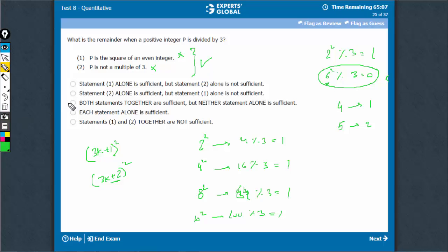Together, it works. We get 1 as a unique answer. We use both the statements. The answer is option C.